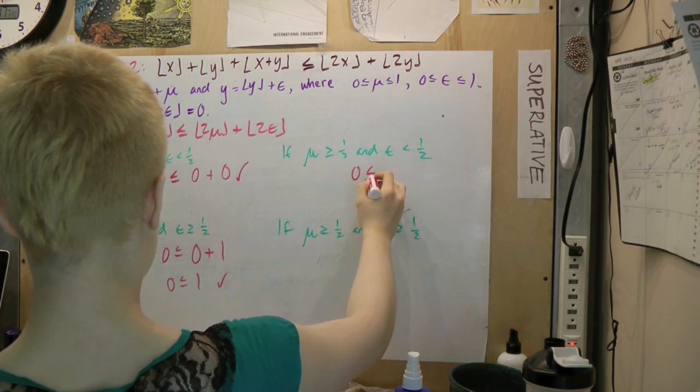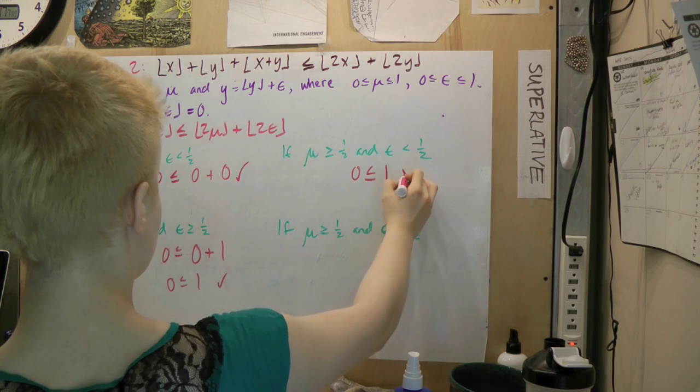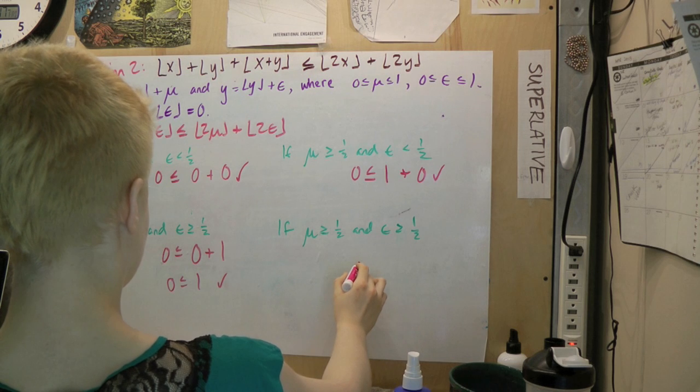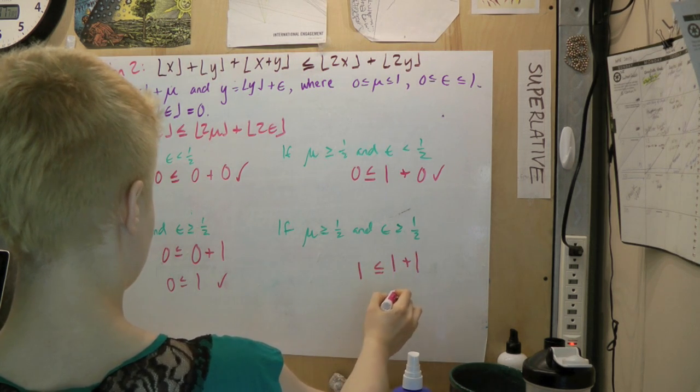In the third case, mu is greater than or equal to 1 half and epsilon is less than 1 half. Thus, the left side is 0 and the right is 1 plus 0. Three for three, oh yeah!